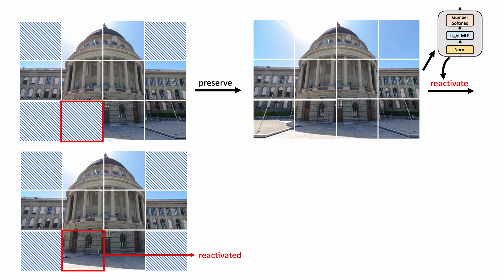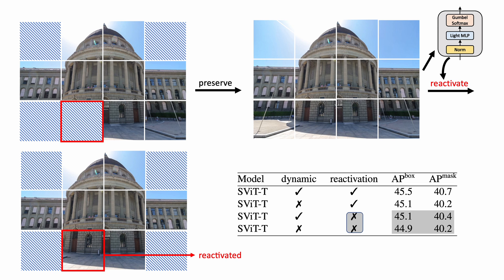After pruned tokens are preserved in feature maps, we further reactivate previously disabled tokens according to new predictions from the gating network. The gating network is allowed to select previously unselected tokens and thus is able to reactivate tokens. Our ablation studies reveal that reactivating tokens can improve detection accuracy within a given computation budget because the model has a wider range of tokens to choose from.